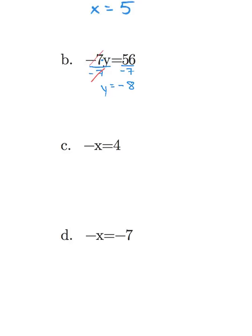In example C we have negative x equals four. Remember that if there is no number there, it is implied to be a negative one. So we divide both sides by negative one, giving x equals negative four. Similarly in example D, since it's a minus, it's technically negative one times x; we divide by negative one and get x equals positive seven.